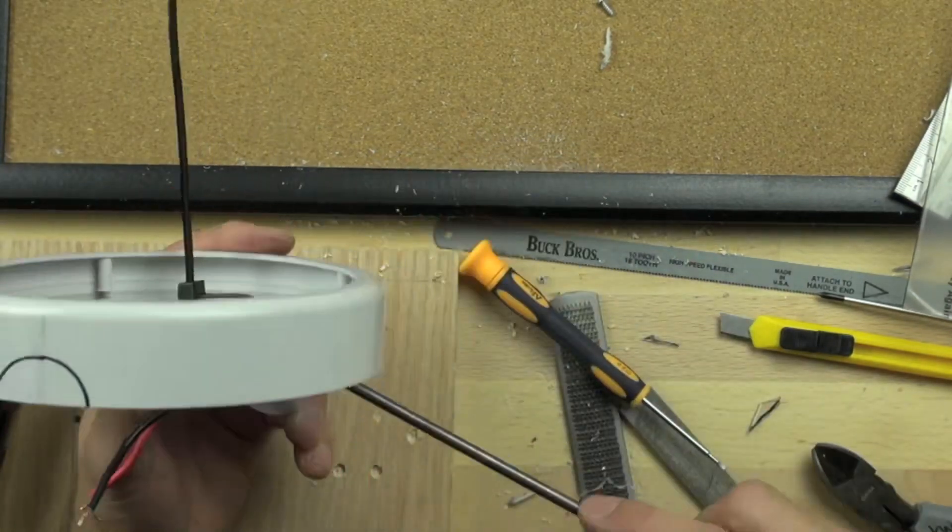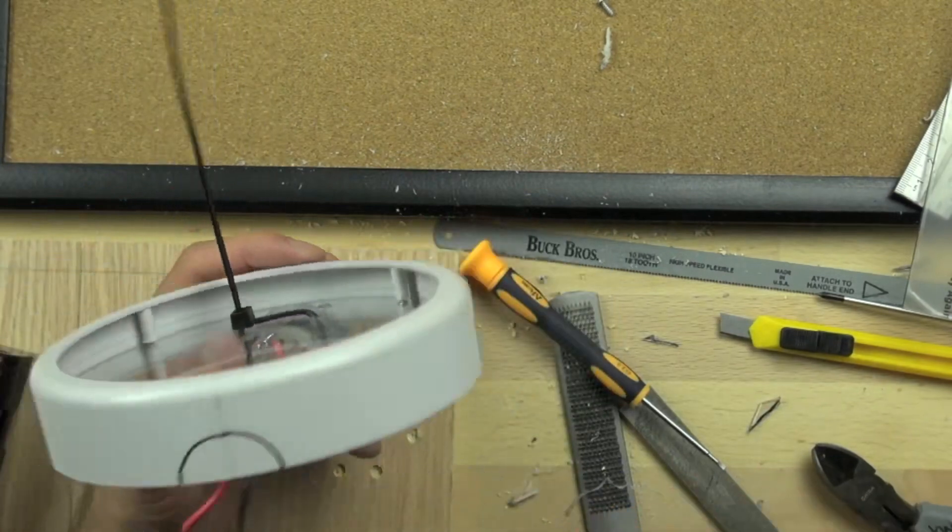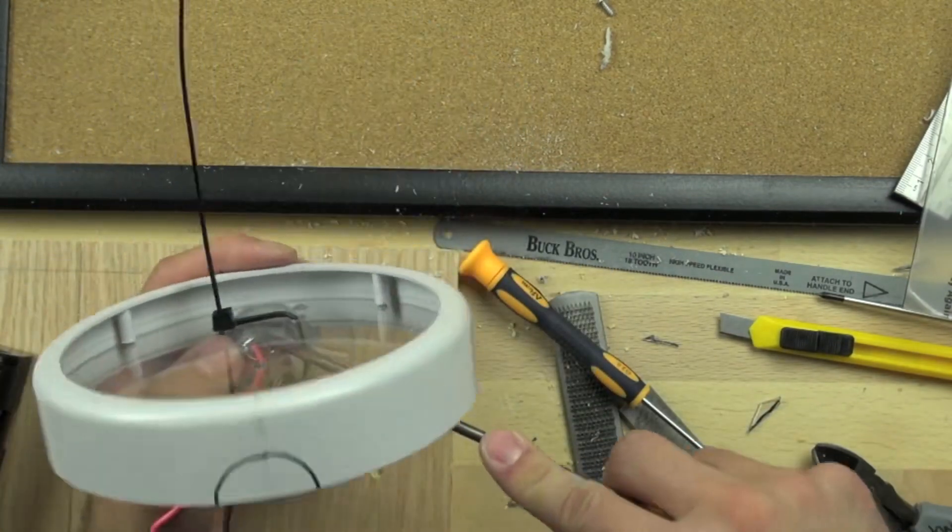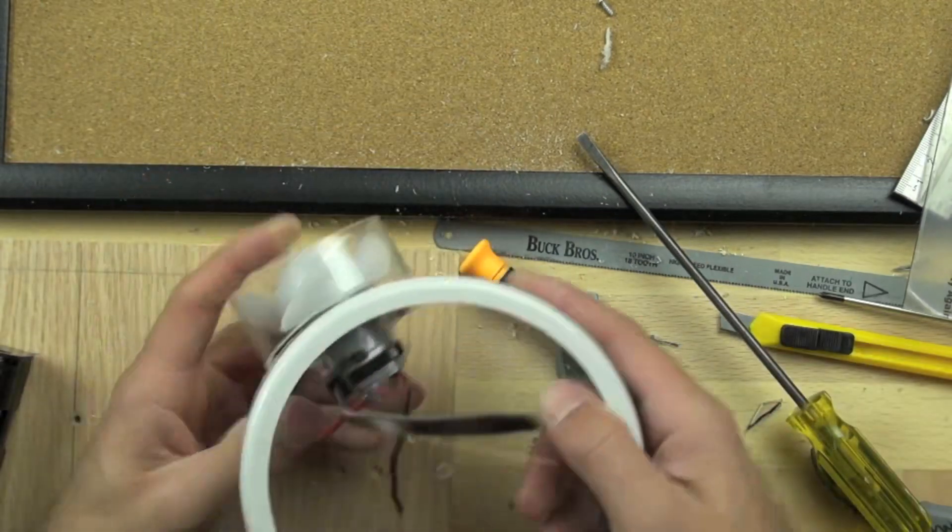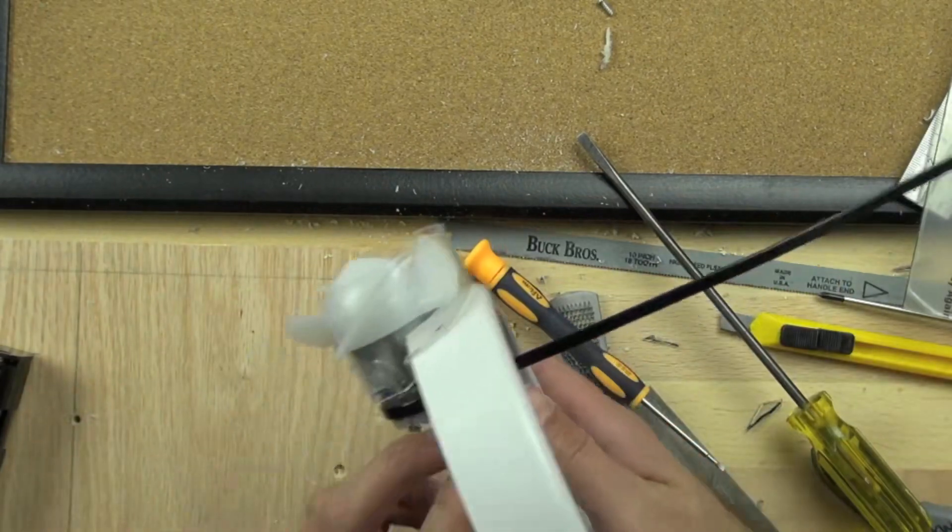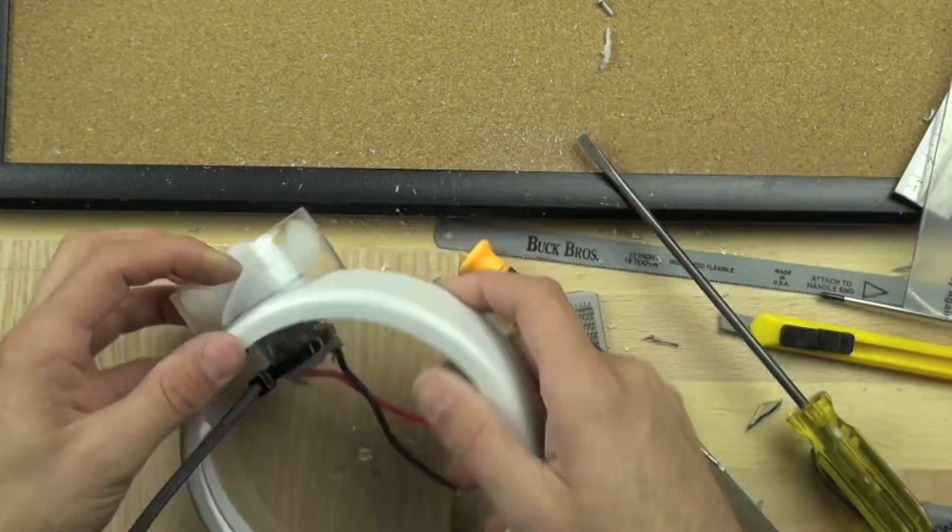We want to make sure the shim is tightly secured in there. The shim is just made out of another piece, it's the same type of Lexan, same thickness. We just cut a little piece of it that's about half an inch square and stuck it underneath that part of the motor.